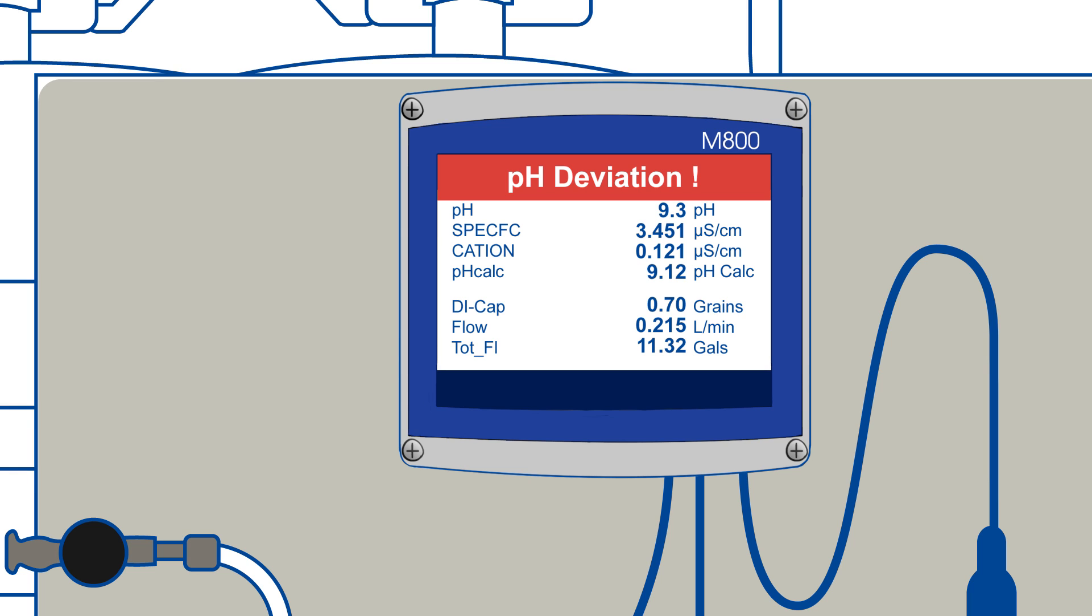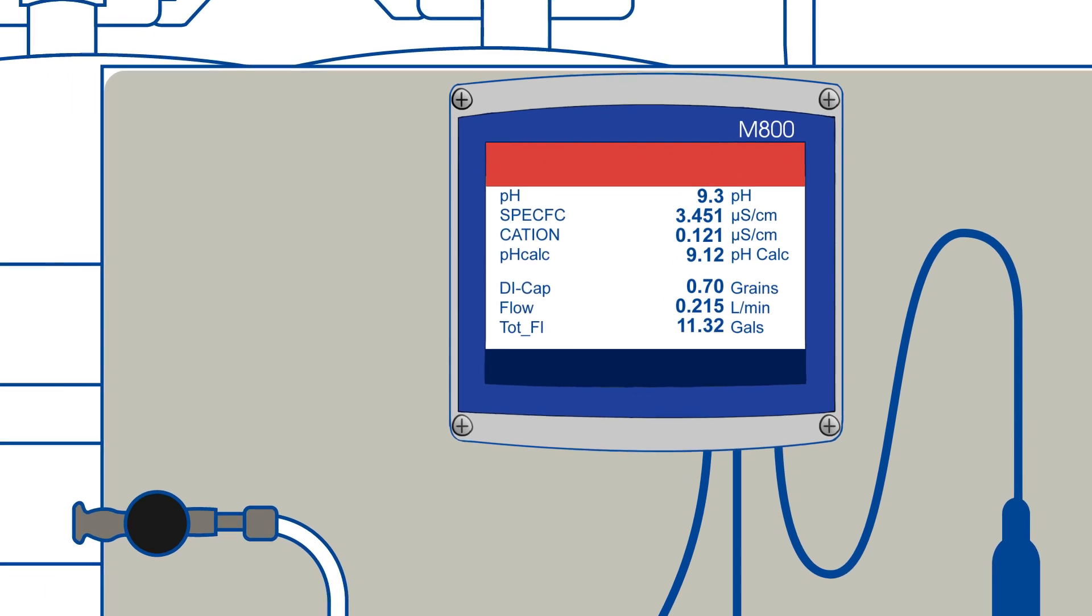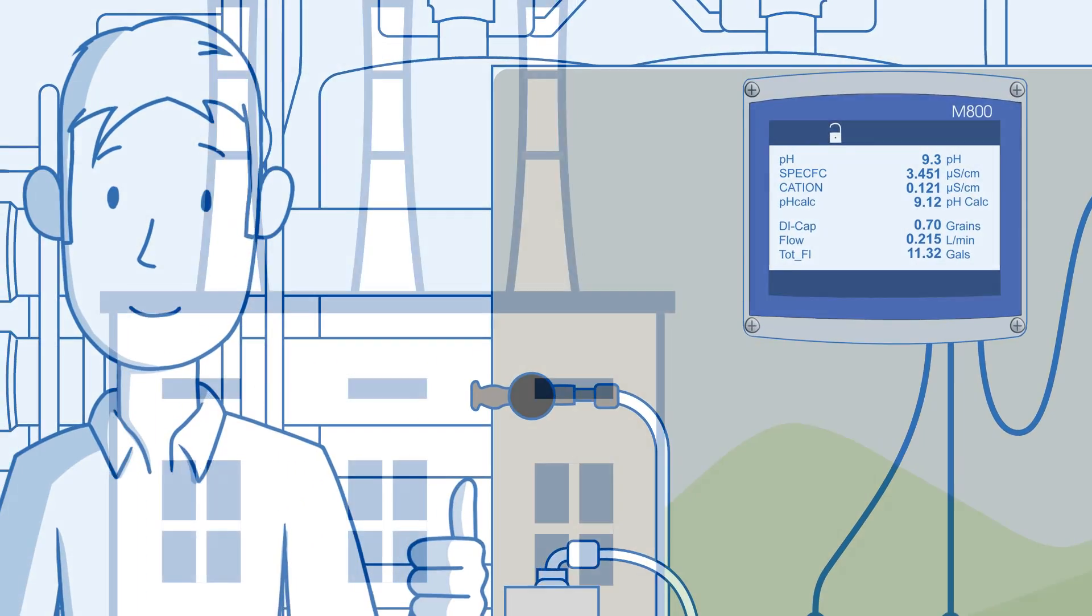The M800 even has a built-in alarm to alert you if the pH measurement deviates from the calculated pH measurement for extra security and peace of mind.